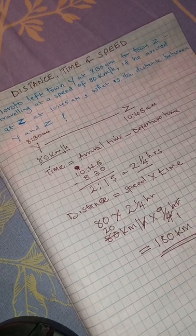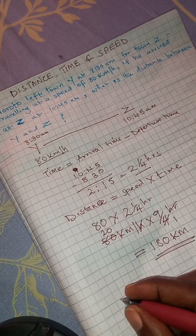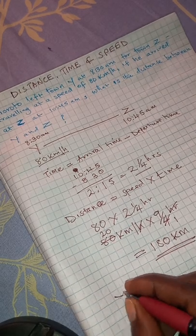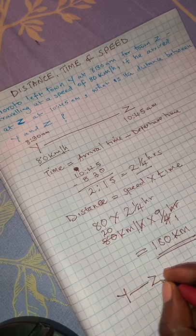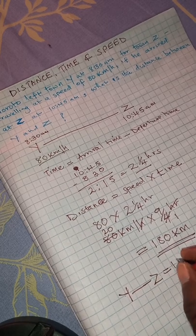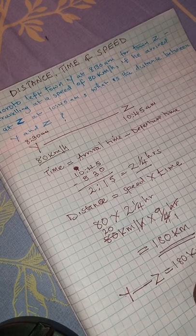The distance between town Y and Z was equal to 180 kilometers.